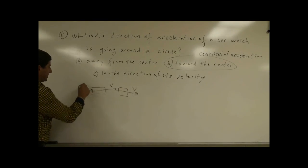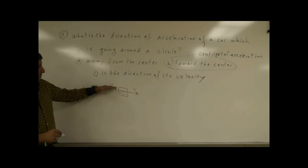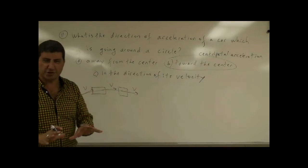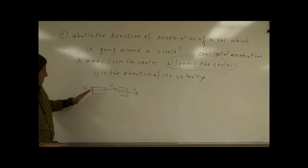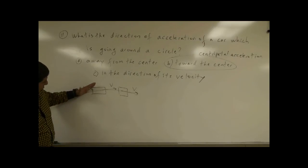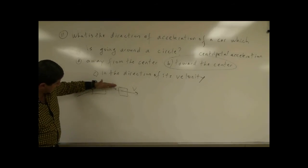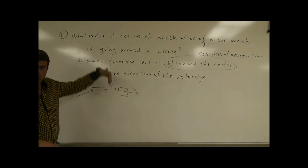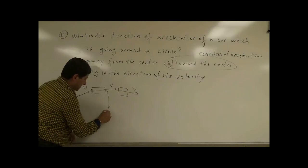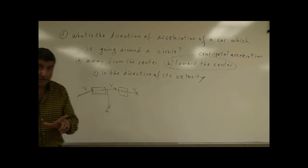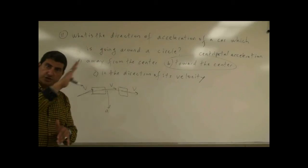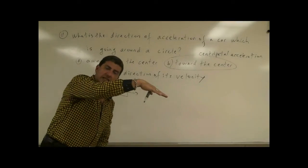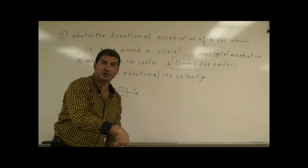Initially the velocity was pointing this way, then this way, then this way. If we subtract those vectors — I'm not going to do a formal vector subtraction right now — but if we subtract those vectors we tend to see that it was initially pointing up, then slightly pointing horizontal, and then downward. So the acceleration is towards the center because the change in the direction of the velocity is downward. Initially it began pointing up, then it went down, so it's accelerating toward the center.